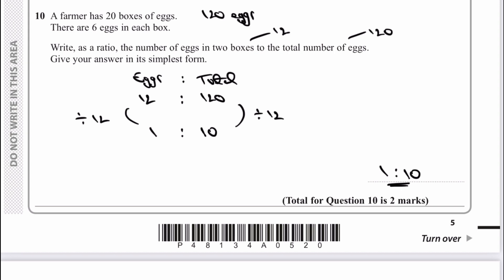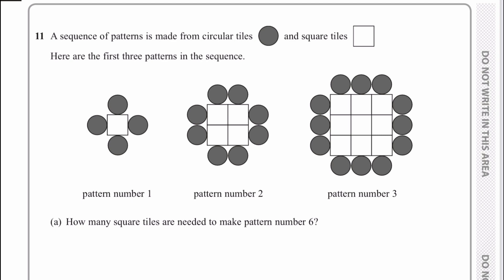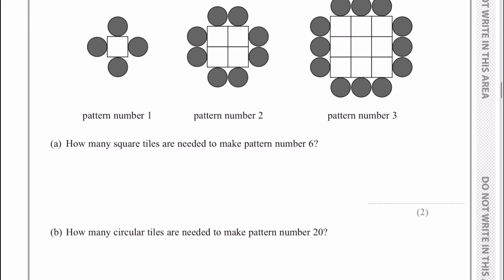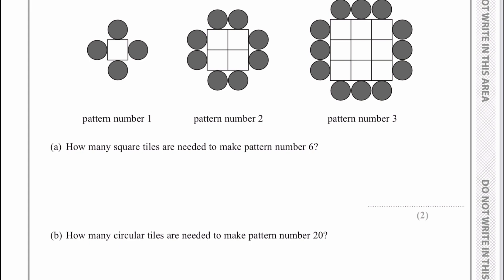Let's move on then to question number 11. It's fairly wordy so you need to spend a bit of time reading through it. The first part is: how many square tiles are needed to make pattern number 6? Looking at each pattern: pattern 1 has 1 square tile, pattern 2 has 4, pattern 3 has 9. What we're actually doing is squaring the pattern — the number of square tiles is n squared. So for pattern number 6, there are going to be 36 square tiles.